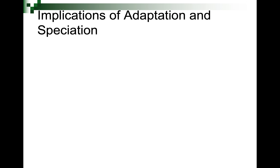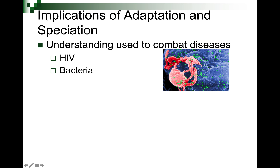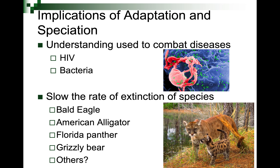As we understand more about speciation and how it happens in nature, we have greater ability to combat disease — things like HIV, bacteria, and even cancer. We can also slow the rate of species extinction. Success stories include the bald eagle, American alligator, Florida panther, and grizzly bear. There are many others locally where native endangered species are recovering. And that is where we'll end our lecture today — I hope you enjoyed it and are having a good November. We'll see how things go as we wrap up the rest of the semester.